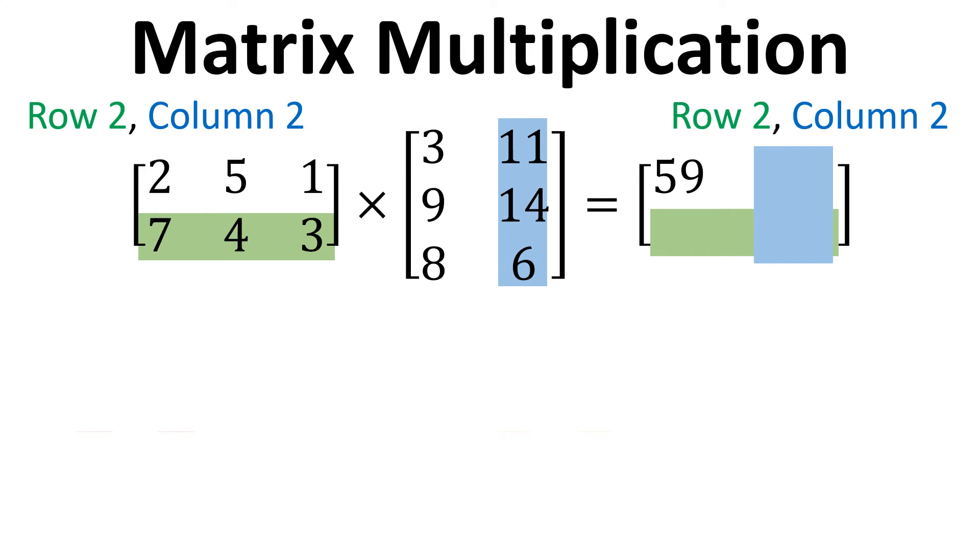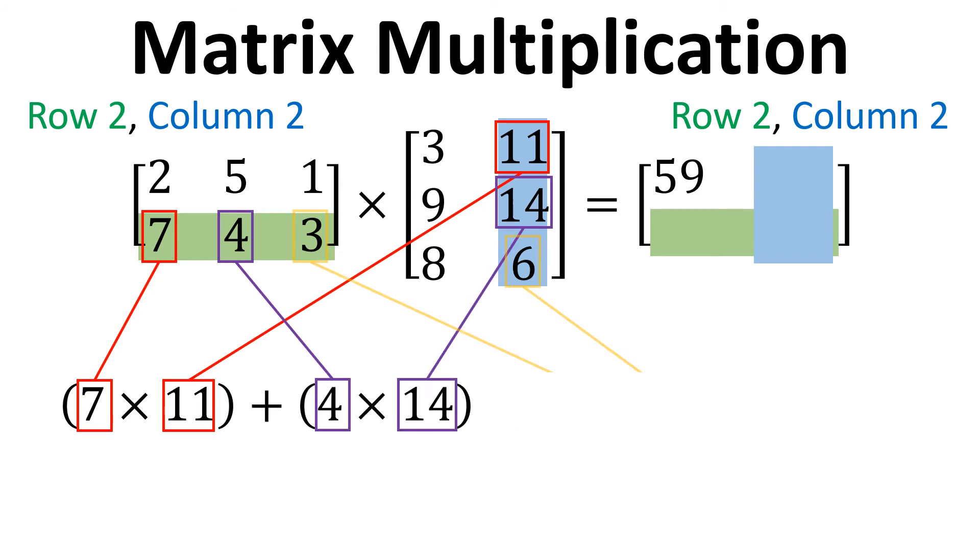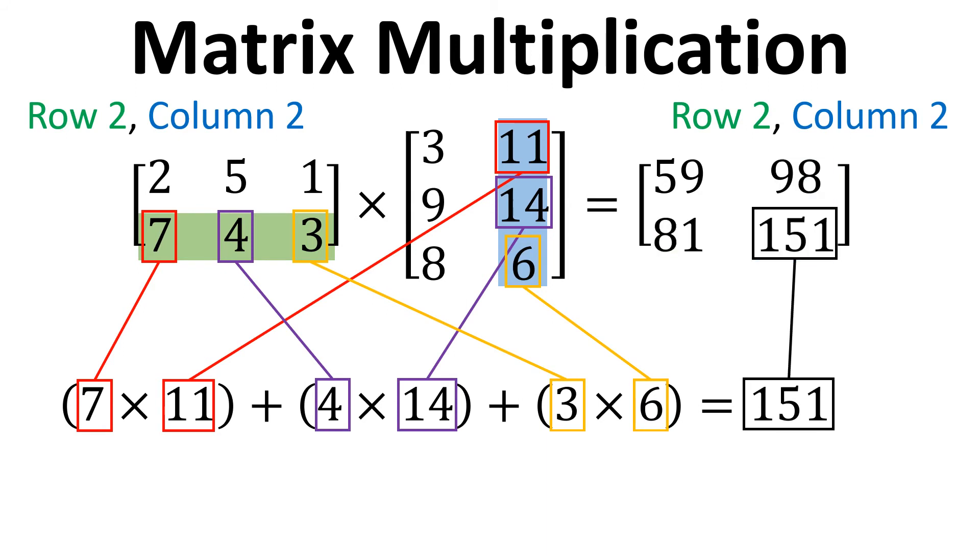The final one then is row 2, column 2 and it's the same process. So we've got 7 times 11, 4 times 14, 3 times 6. Add that up we get 151 and so that is then the entry for row 2, column 2 in our answer matrix.